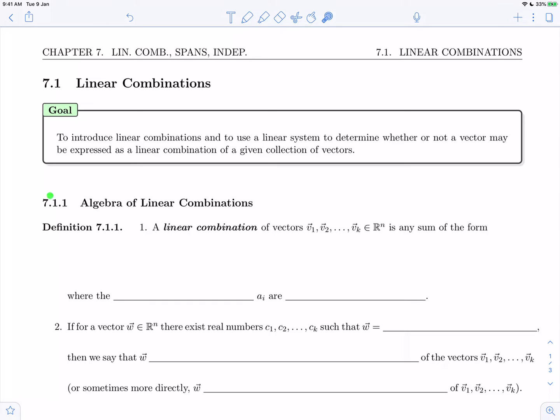So let's get started with Subsection 7.1.1, the Algebra of Linear Combinations. We'll start with this definition: A linear combination of vectors v1, v2, up to vk in R^n is any sum of the form a1 times v1 plus a2 times v2 all the way up to ak times vk.